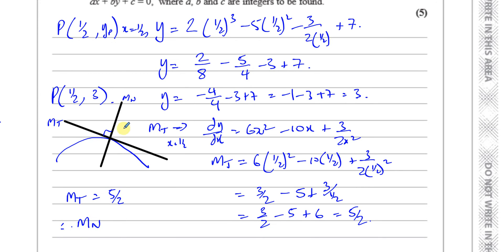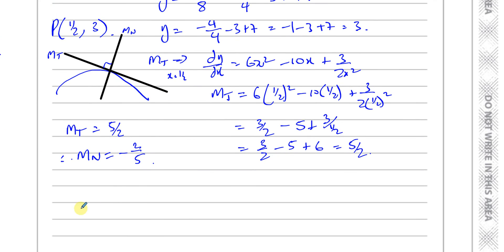The gradient of the normal, which is perpendicular to the tangent, is the negative reciprocal of 5/2. We change the sign and flip it, giving minus 2/5. The product of the tangent gradient and normal gradient equals minus 1 because they're perpendicular. So now I have everything needed to find the equation of the normal: the gradient of the normal is minus 2/5, and the point on the line is (1/2, 3).